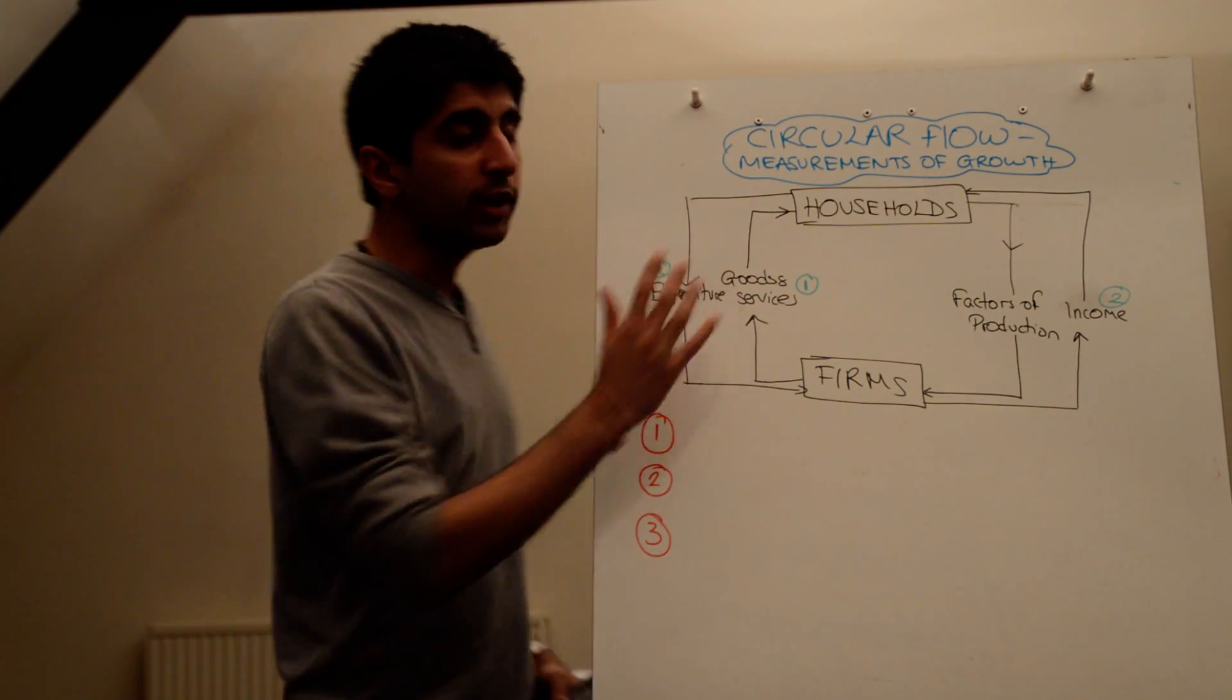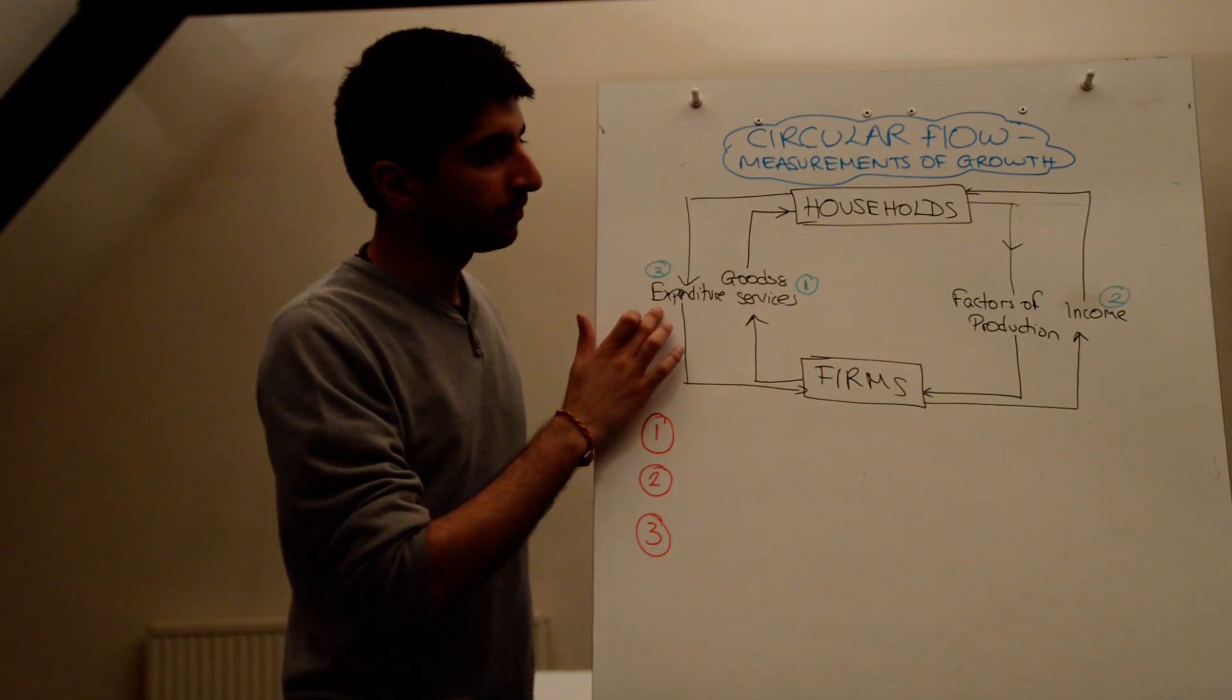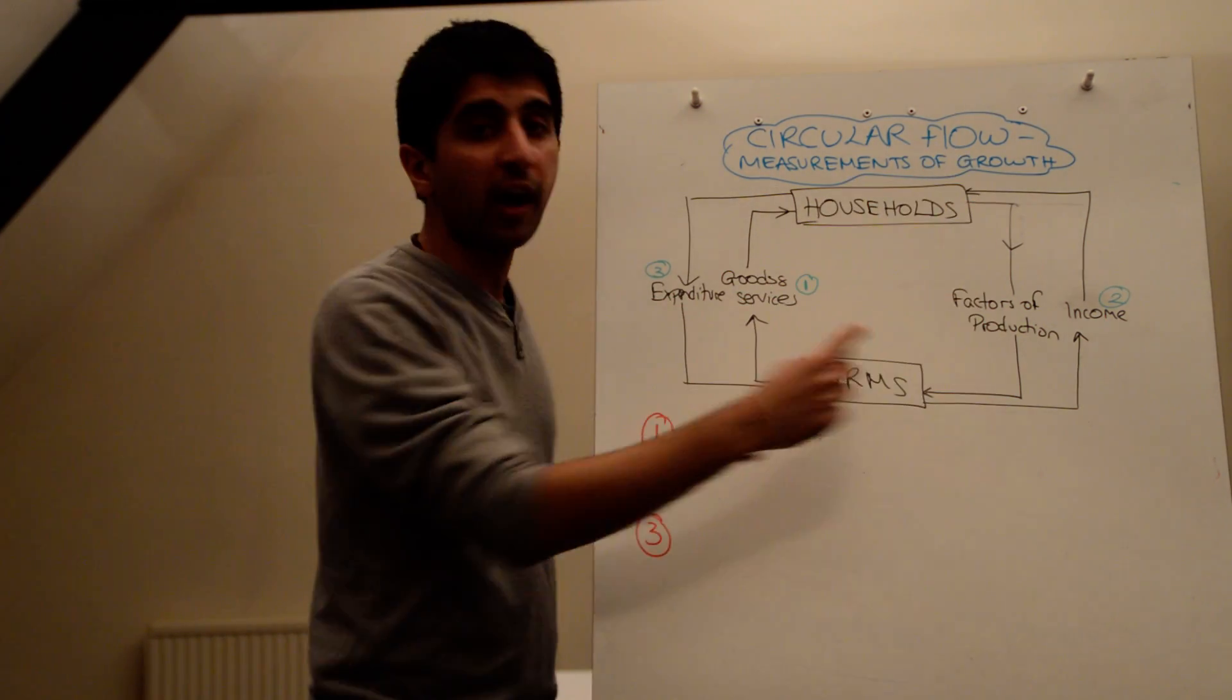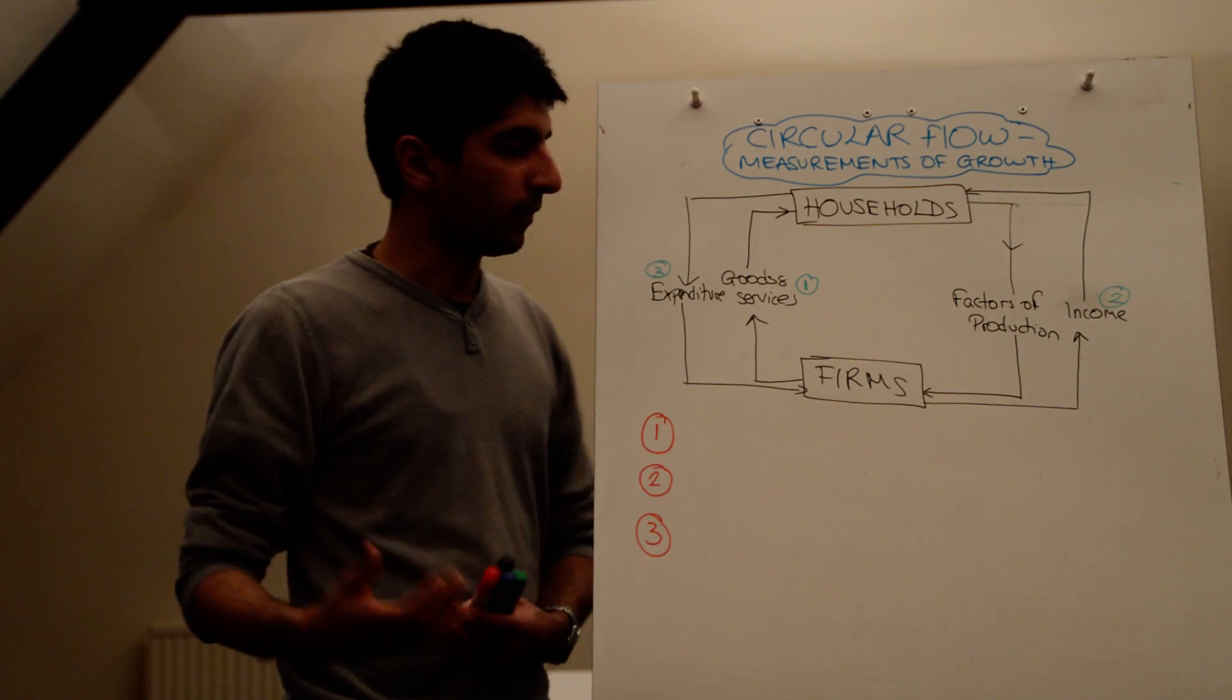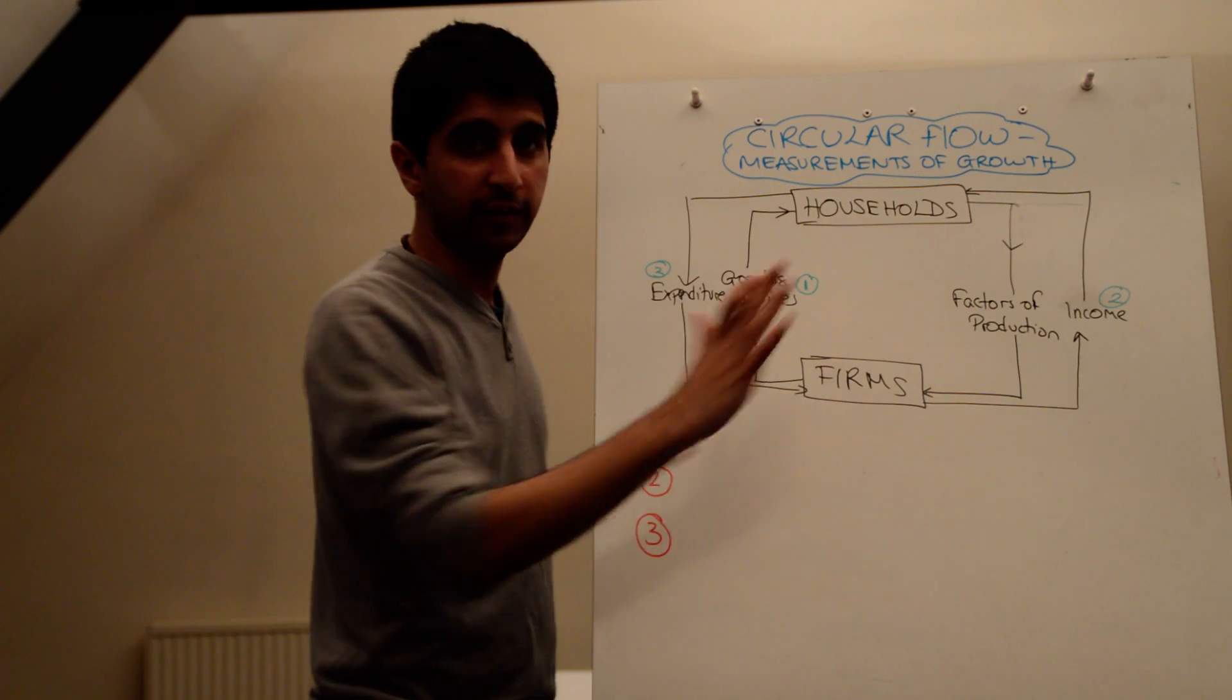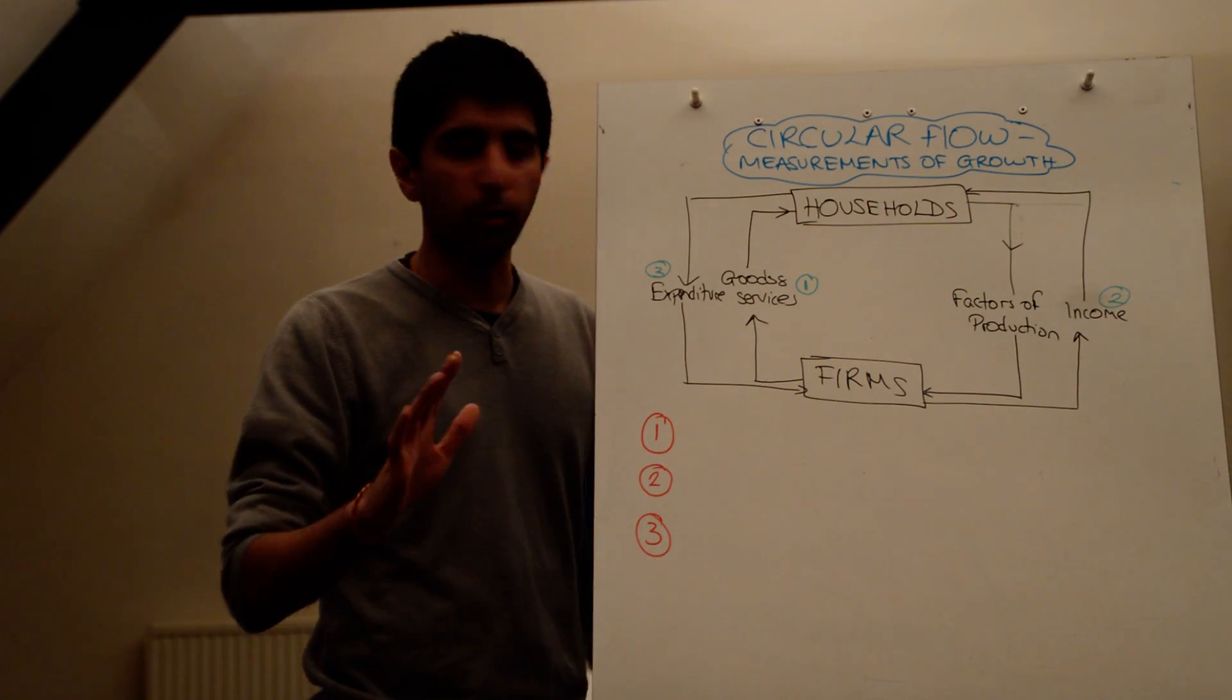So what I've done, I've redrawn the circular flow, but I've just added a couple of things on to it. We've still got income, we've still got expenditure, but now I've just added on the first stage, where households provide factors of production, basically labour, to firms, and firms use that to then produce goods and services, which are then bought up by households. So I've just included these two extra things, otherwise it's exactly the same thing. And yes, we know there are leakages to the circular flow and injections, they're not really important here.